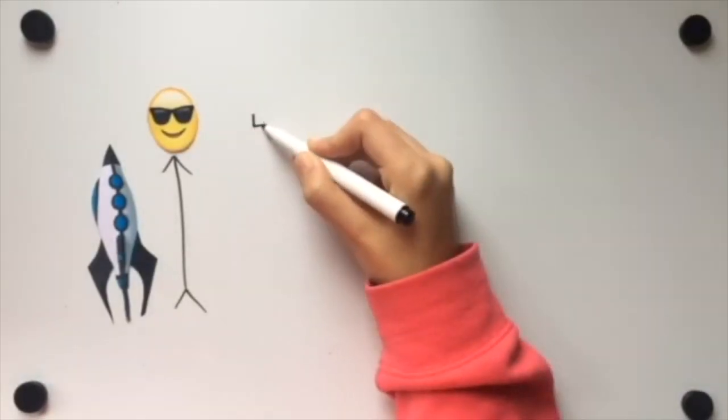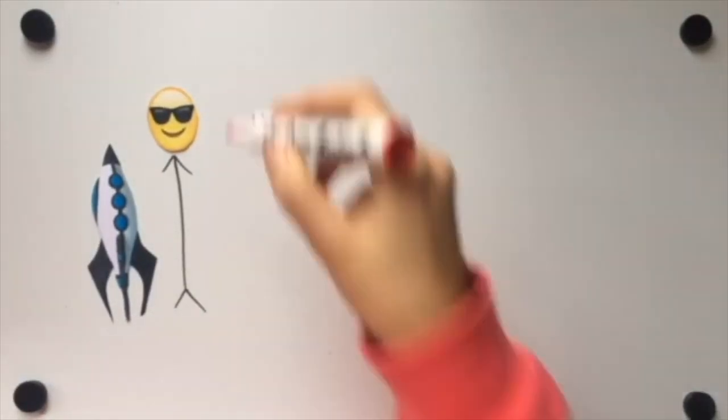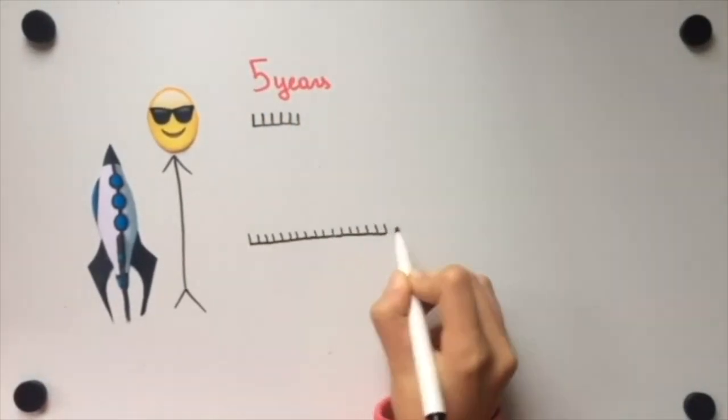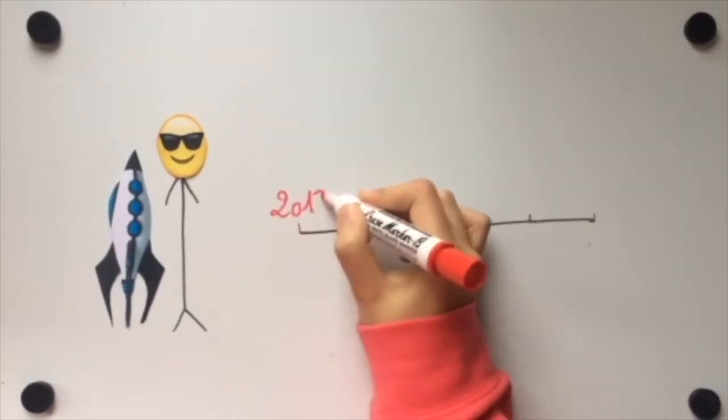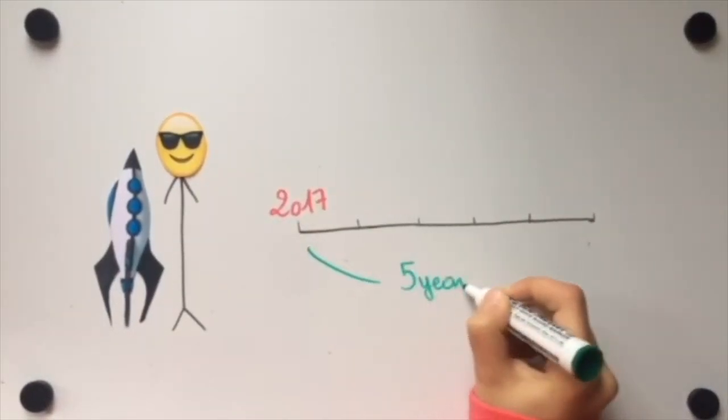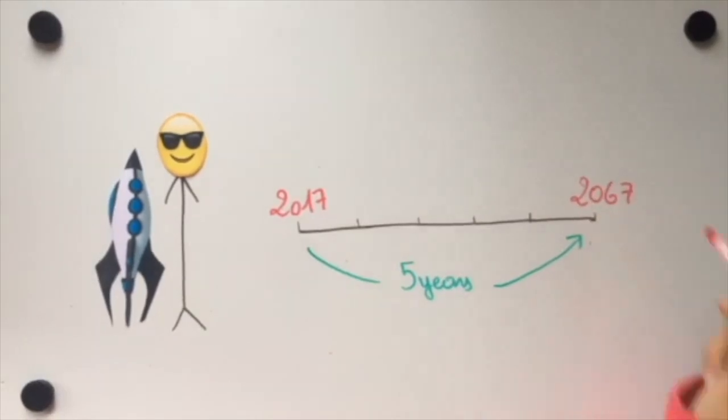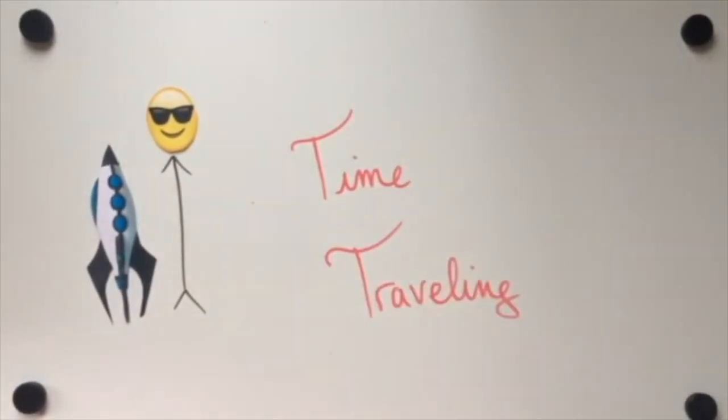Because time passed more slowly for you, you would have experienced only 5 years, while your friends have experienced a full 50 years. So, if your journey began in 2017, it would have taken you only 5 years to travel to the year 2067. This means you have been time traveling.